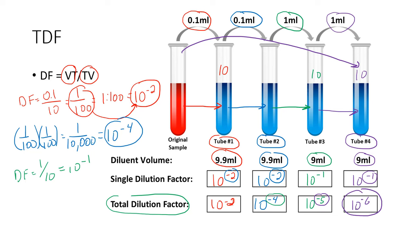You need to know those total dilution factors in each tube in order to determine things like original culture density. That wraps up this particular tutorial, but I will be making another one where we also go on to calculate the OCD, or original culture density. So I'll see you in that tutorial.